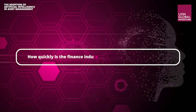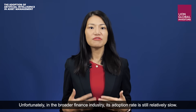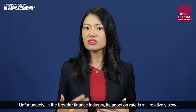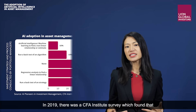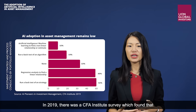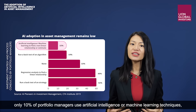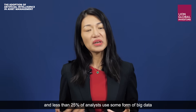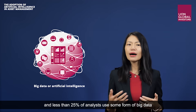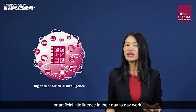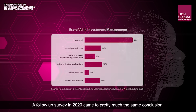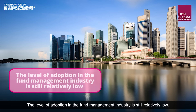How quickly is the finance industry adopting artificial intelligence? In the broader finance industry, the adoption rate is still relatively slow. A 2019 CFA Institute survey found that only 10% of portfolio managers use AI or machine learning techniques, and less than 25% of analysts use some form of big data or AI in their day-to-day work. A follow-up survey in 2020 came to pretty much the same conclusion — the level of adoption in fund management is still relatively low.